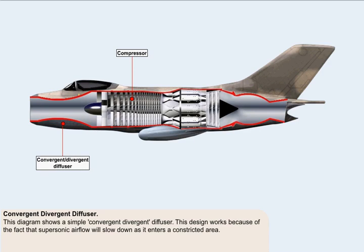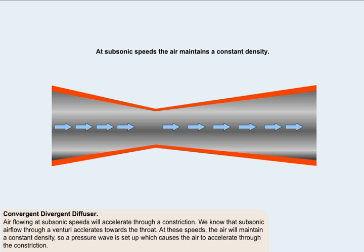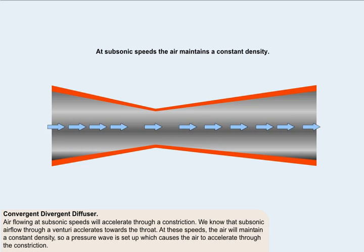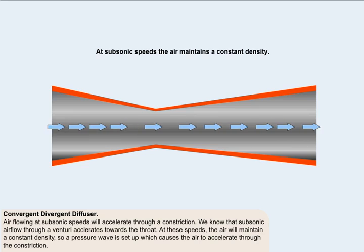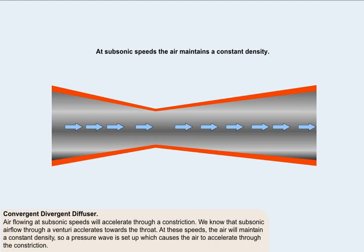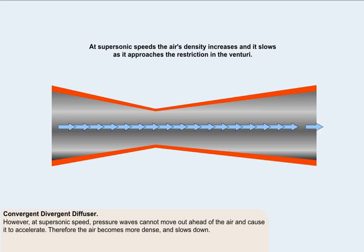This diagram shows a simple convergent-divergent diffuser. This design works because of the fact that supersonic flow will slow down as it enters a constricted area. You will note that this is the opposite response to that which happens with subsonic flow. Air flowing at subsonic speeds will accelerate through a constriction. We know from the previous lesson that subsonic airflow through a venturi accelerates towards the throat. At subsonic speeds, the air will maintain a constant density and as a result, a pressure wave is set up which causes the air to accelerate through the constriction. However, at supersonic speed, pressure waves cannot move out ahead of the air and cause it to accelerate.